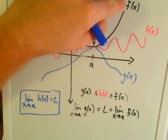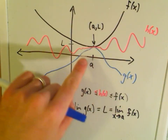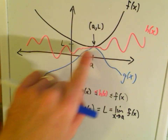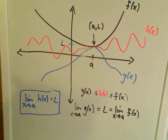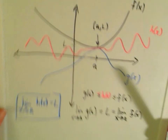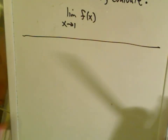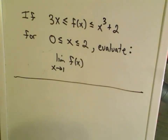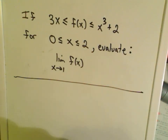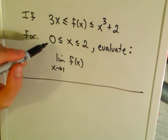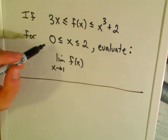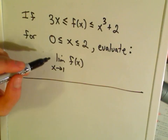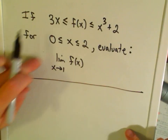If the big function f(x) and the small function g(x) are getting squeezed together and have limit L, and h(x) is in between those two functions, then it must also have that same limit L. For the first example: if f(x) is greater than or equal to 3x but less than or equal to x³ + 2, and this holds for all x between 0 and 2, we want to evaluate the limit as x approaches 1 of f(x).